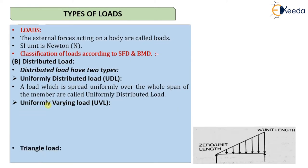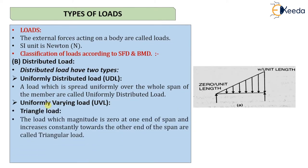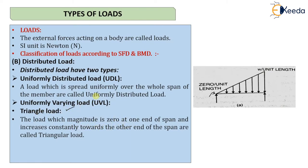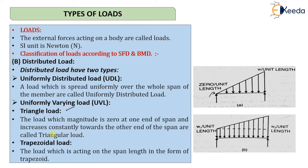Uniformly varying loads have two types: triangular and trapezoidal. A triangular load has zero magnitude at one end and increases constantly towards the other end. A trapezoidal load acts on a span length in the form of a trapezoid — it has some intensity at both ends, forming a trapezoidal shape over the member.